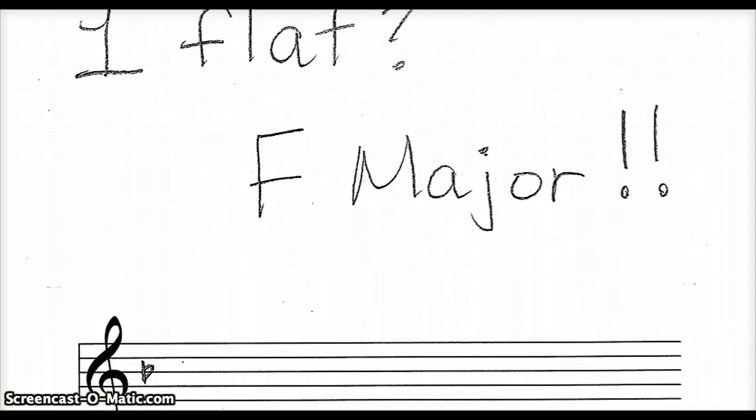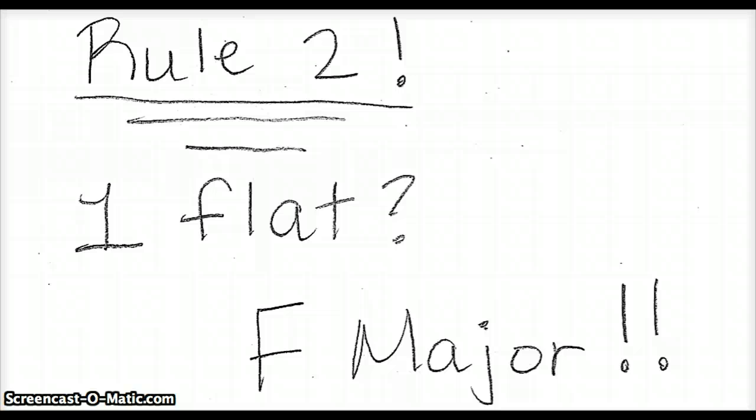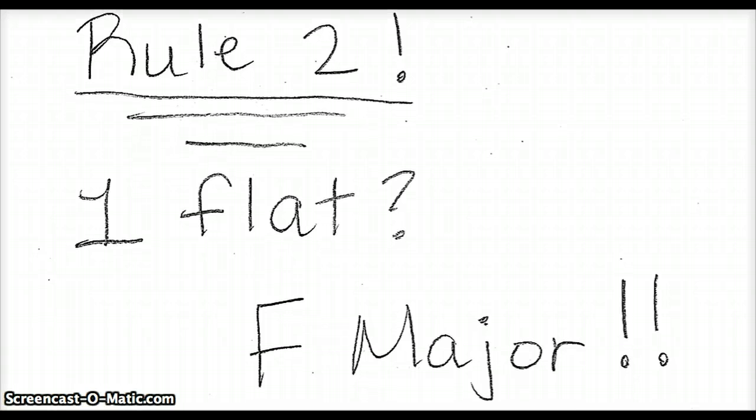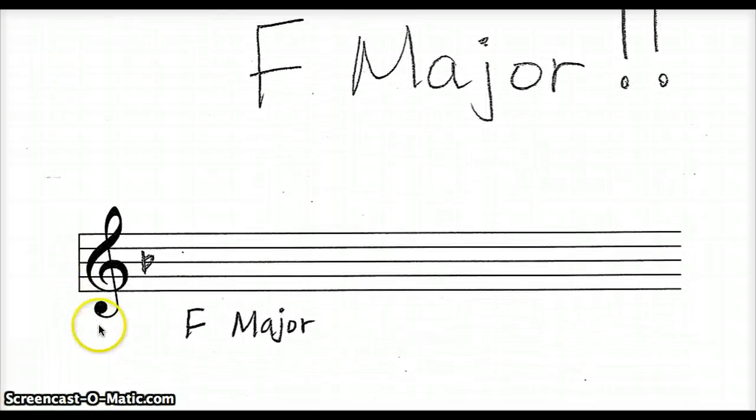The second rule is that if there is one flat in the key signature, then we are in F major. So if we have a treble clef and we have one flat, we're in the key of F major.